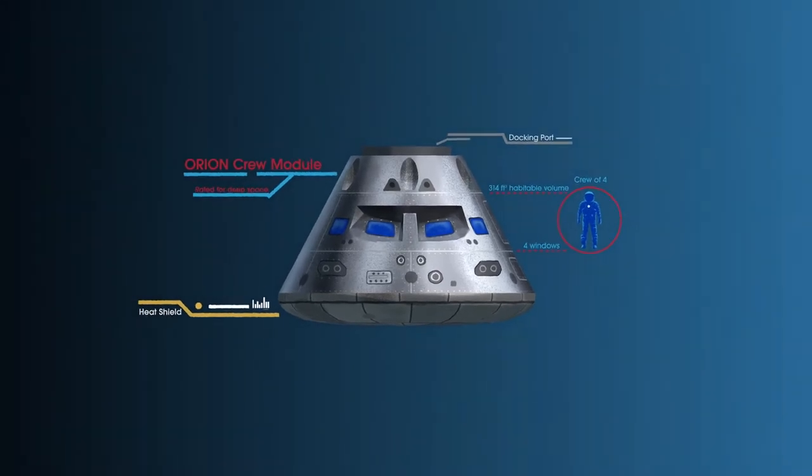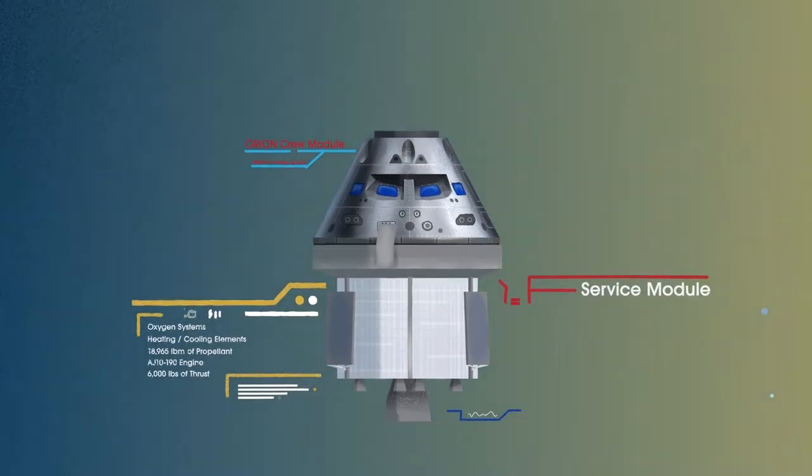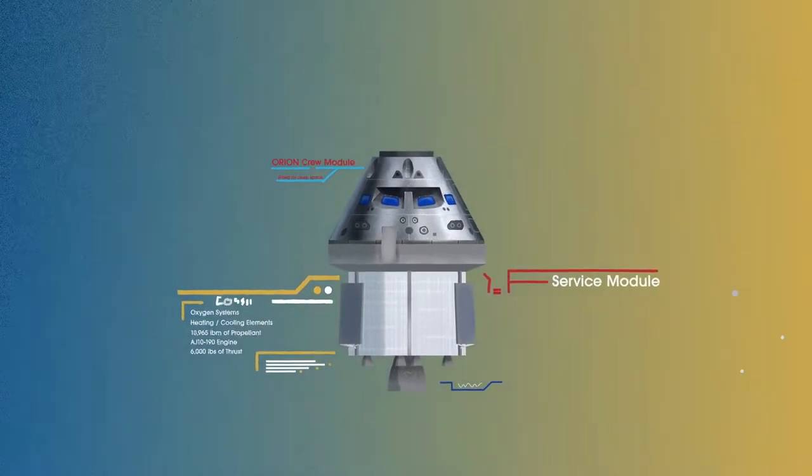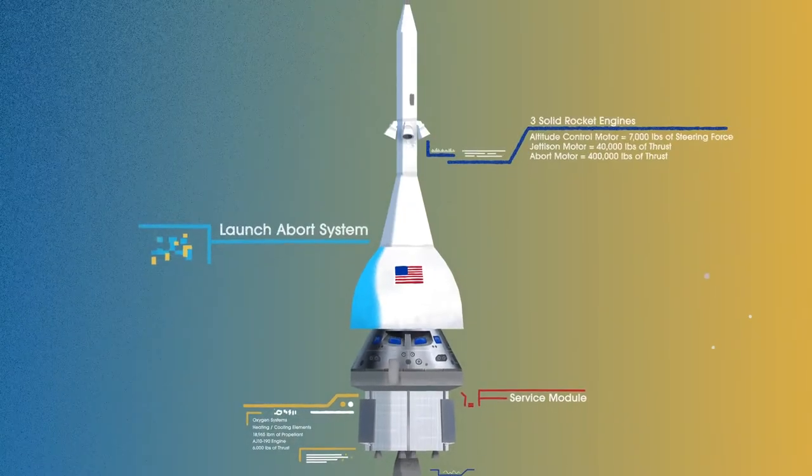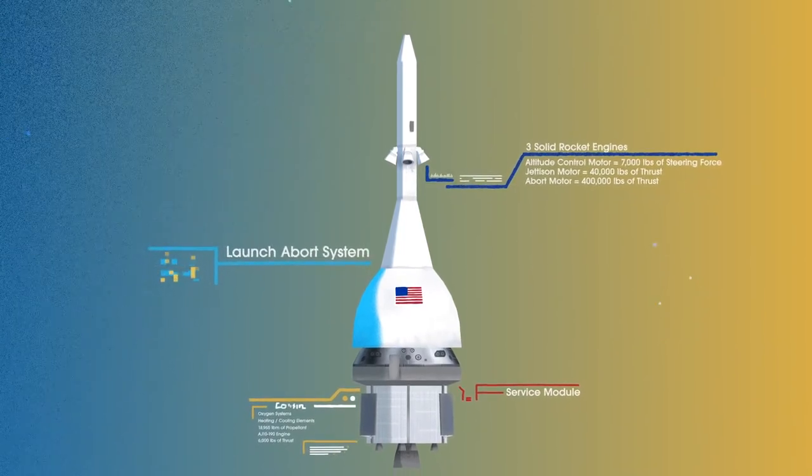The crew module, where up to four astronauts will live and work throughout the flight. The service module, with life-support systems for the crew and its own engine and fuel reserves, and a launch abort system, with engines capable of pulling the crew module to safety during launch should anything go wrong.